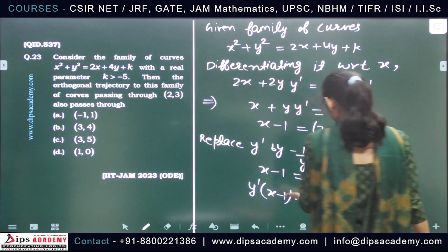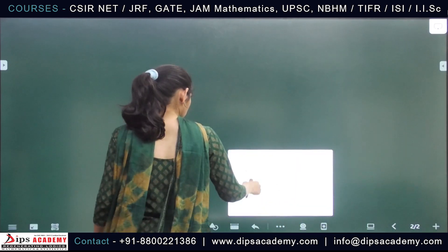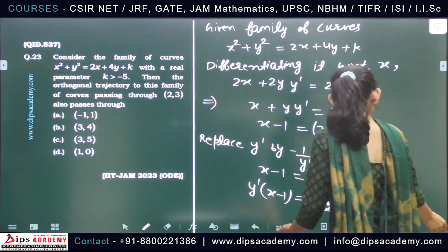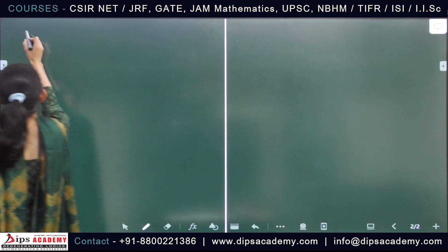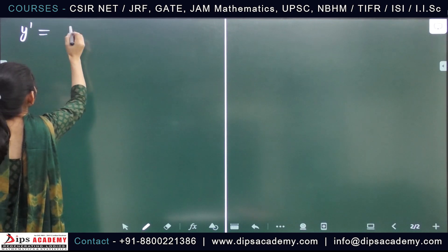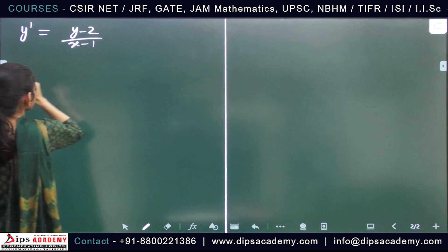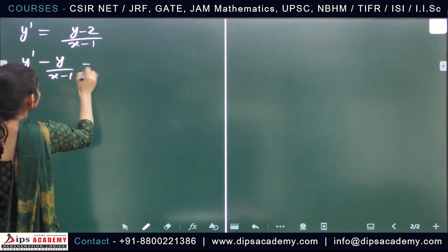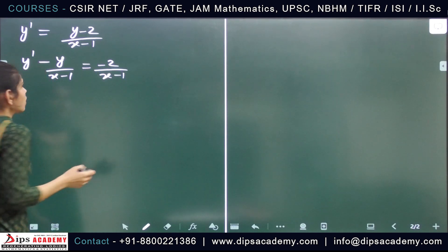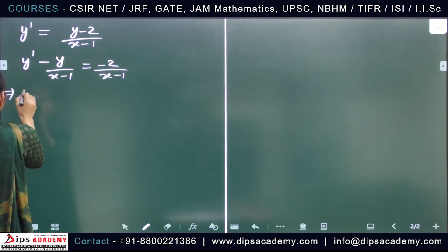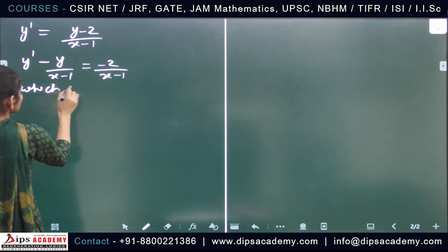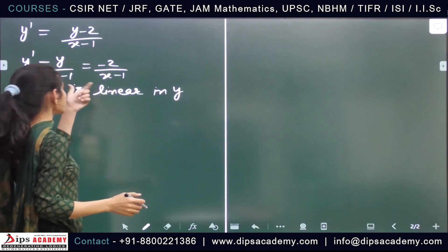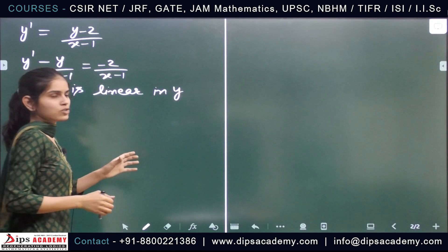This differential equation can be rewritten as y' = (y − 2)/(x − 1), which is linear in y. The solution of this differential equation will give us the orthogonal trajectory of the given family of curves.